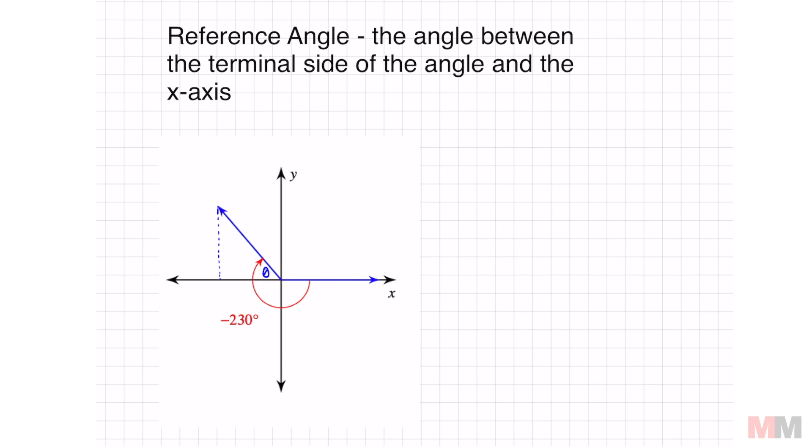When you start this problem, don't worry that this is negative. Just look at 230. You want to check if that is over 360. And if it's not over 360, then it's super easy.